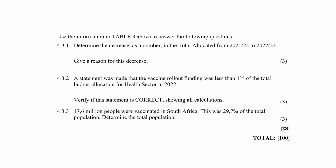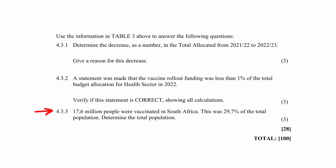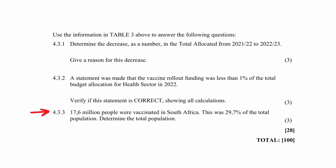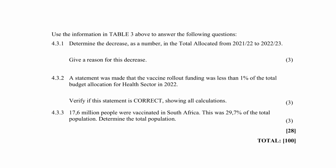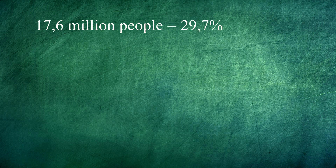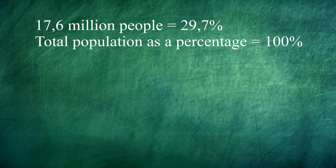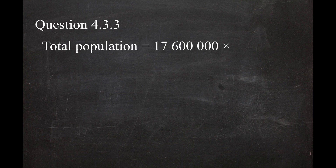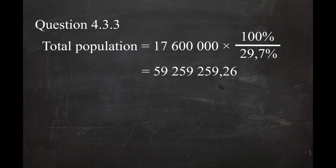In question 4.3.3, it is stated that 17.6 million people were vaccinated in South Africa, which is 29.7 percent of the total population. You have to determine the total number of people in the population. 17.6 million people equals 29.7 percent of the population, and the total population equals 100 percent. The total population is therefore 17.6 million multiplied by the ratio of 100 percent divided by 29.7 percent.